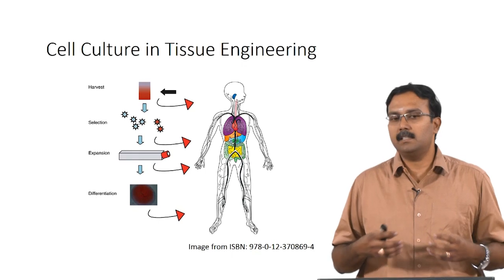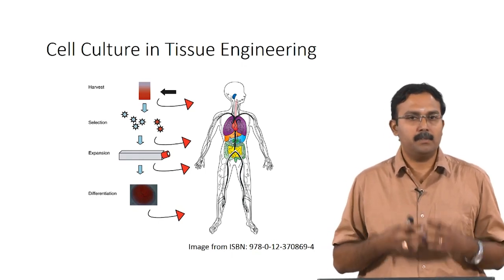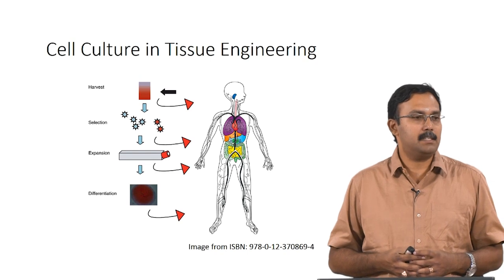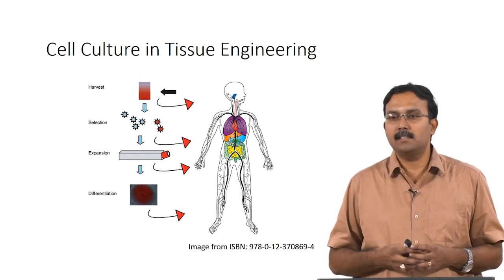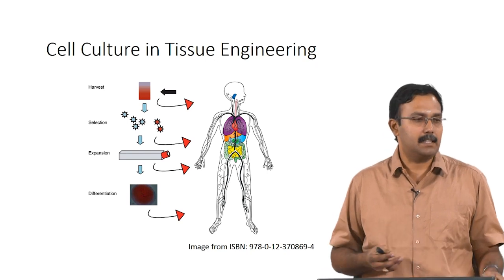Once you have the cells, we should also look at how they would be cultured, and in case we are working with stem cells, how the cells would be differentiated. All these aspects are crucial. We will talk about first harvesting the cells, selecting and isolating the cells, expanding or culturing the cells, and differentiating the cells — these are the different aspects of cell culture.